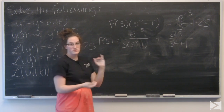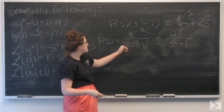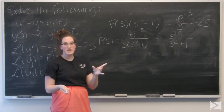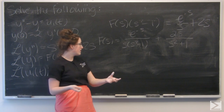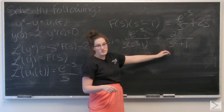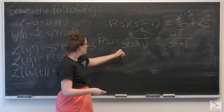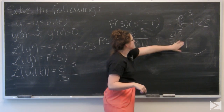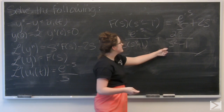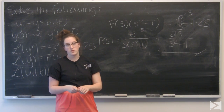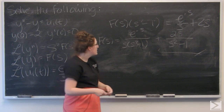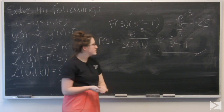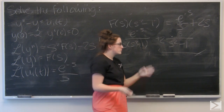From here I want to evaluate term by term. For the first term, the denominator is s times the quantity s squared minus 1, so I'll need partial fractions. The second term, however, is pretty much good to go. This should be a minus, so it looks like the inverse Laplace transform of hyperbolic cosine of t. Moving the 2, its inverse Laplace transform is going to be 2 cosh of t.